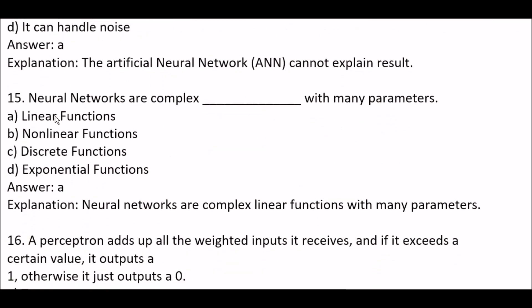Next question: neural networks are complex blank with many parameters. Option A: linear functions. Option B: non-linear functions. Option C: discrete functions. Option D: exponential functions. The right answer is option A — neural networks are complex linear functions with many parameters.